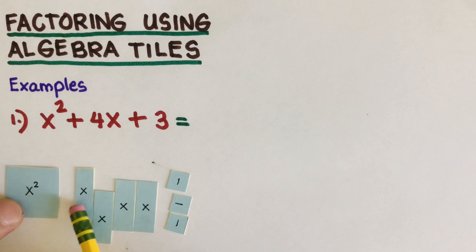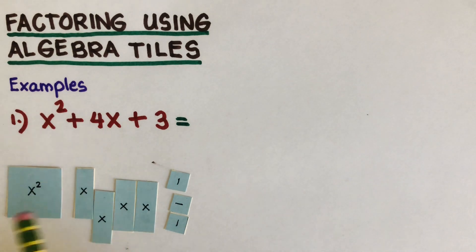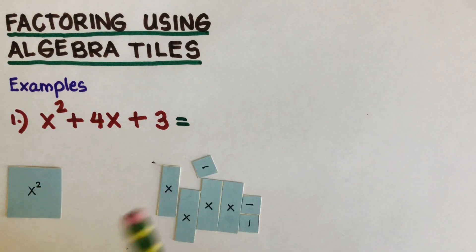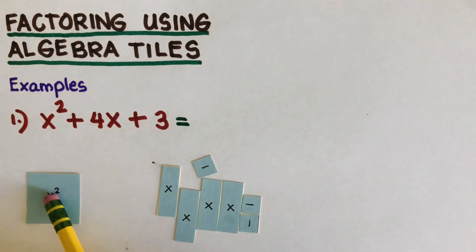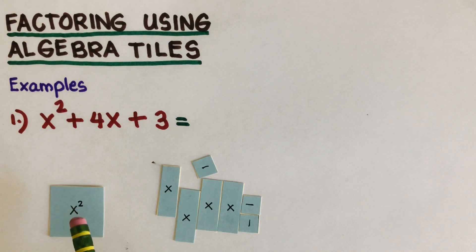Our task today is to come up with a rectangle. We remember that to find the area of a rectangle, you just multiply the length and the width. So our target is to create a rectangle out of these tiles. The first trick is to take the x squared tile and put it on the lower left side.